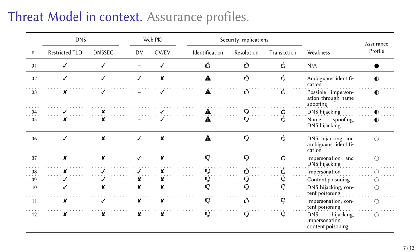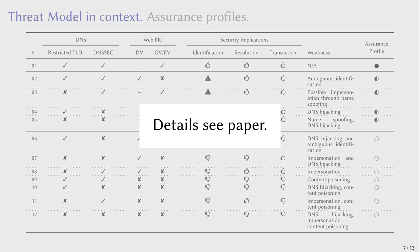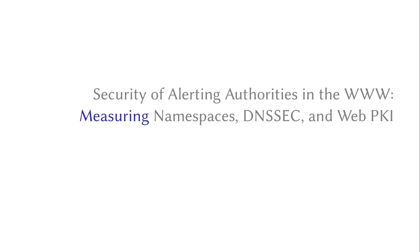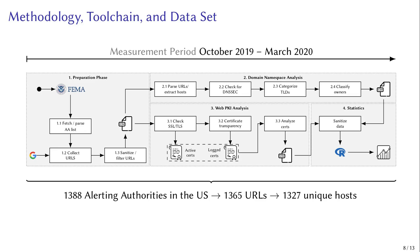For a full overview of all combinations and their security implications and assurance profiles, we refer you to our paper. Now that we have our threat model and understand the role of DNS and WebPKI ecosystems, we apply it to actual alerting authorities. We start with the list of alerting authorities provided by FEMA, comprising 1,388 alerting authorities as of September 2019. We mapped these to 1,365 URLs and in turn to 1,327 unique hosts, and executed measurements from October 2019 through March 2020 from various vantage points in Europe and the US.